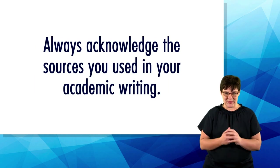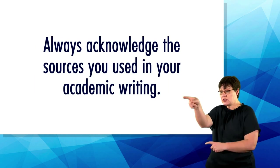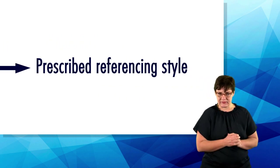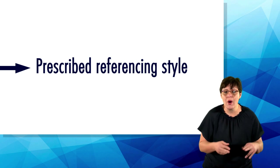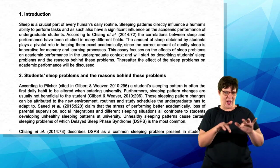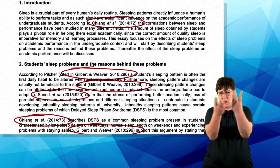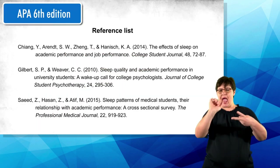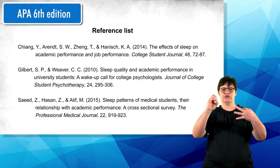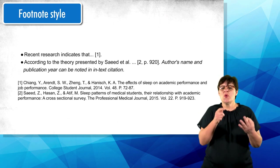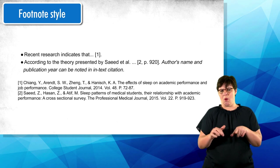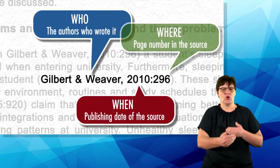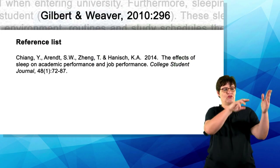By now you know that you always have to acknowledge the sources you used in your academic writing. The way in which you present this acknowledgement depends on your prescribed referencing style. Many referencing styles exist around the world. Well-known styles include Harvard, the American Psychological Association style known as APA, and also footnote styles used by law practitioners. Each of these styles has certain formulas or procedures for text references and reference list entries.